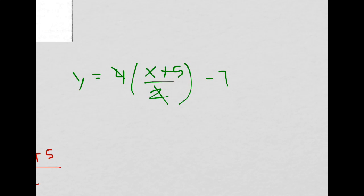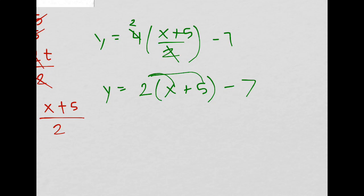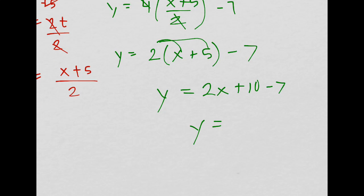Alright, so then I can cross cancel, this becomes 2. So y equals 2 times (x plus 5), minus 7. Well, distribute: y equals 2x plus 10, minus 7, y equals 2x plus 3.